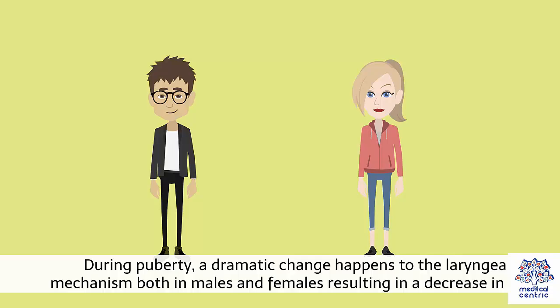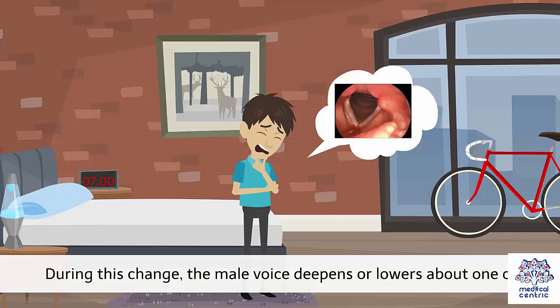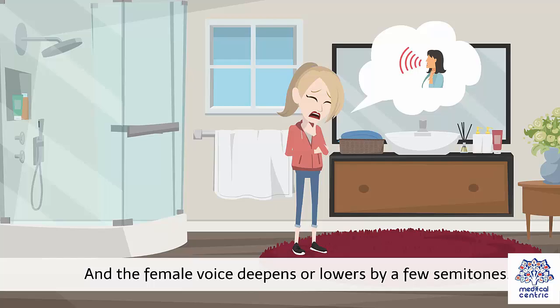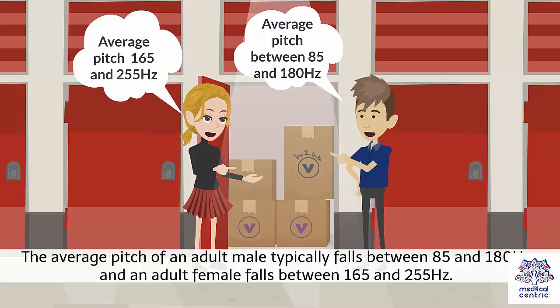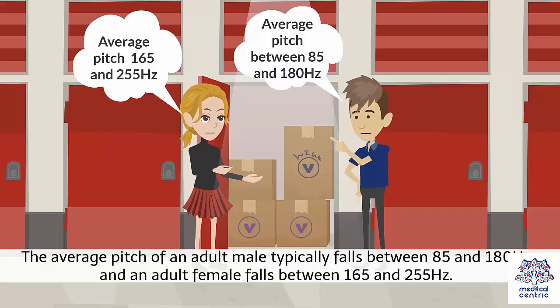During puberty, a dramatic change happens to the laryngeal mechanism both in males and females, resulting in a decrease in pitch. During this change, the male voice deepens or lowers about one octave and the female voice deepens or lowers by a few semitones. The average pitch of an adult male typically falls between 85 and 180 Hz, and an adult female falls between 165 and 255 Hz.